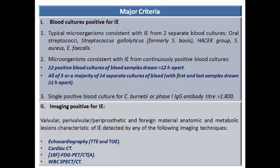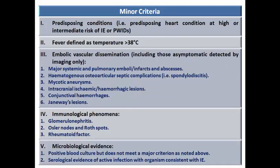Major criteria include blood cultures positive for infective endocarditis — either a typical organism in two separate blood cultures, or a microorganism consistent with infective endocarditis from continuously positive blood cultures — a single positive blood culture or elevated IgG for Coxiella burnetii, or imaging evidence for infective endocarditis such as valvular, perivalvular, periprosthetic or foreign material anatomic or metabolic lesion detected by echo, cardiac CT, PET scan, or SPECT-CT.